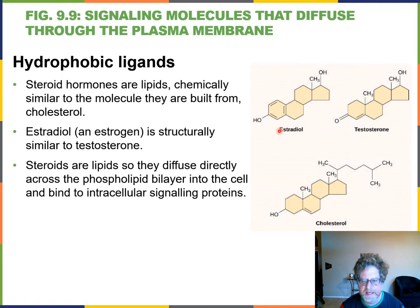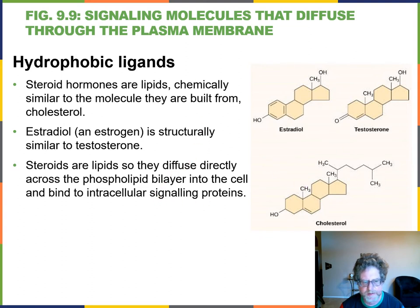Getting back to estrogen and testosterone: because they are lipid-soluble, they can go right through the phospholipid bilayer and don't need their receptor to be in the plasma membrane.